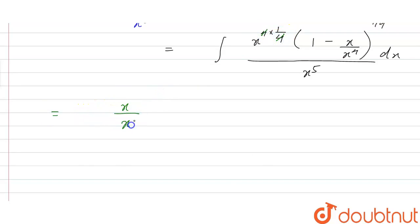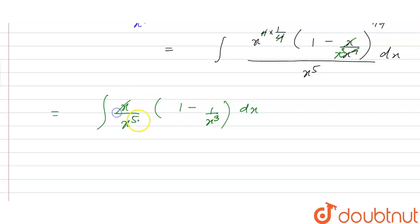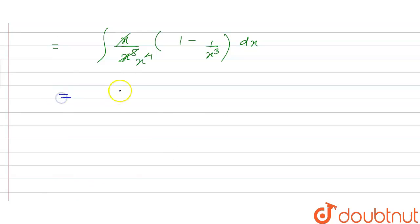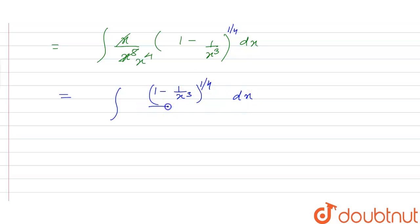Further simplifying, the 4 and 4 will cancel out. We have x upon x raised to power 5, into 1 minus 1 by x raised to power 3, dx. This simplifies to the integral of 1 minus 1 by x raised to power 3, whole power 1 by 4, divided by x raised to power 4, dx.